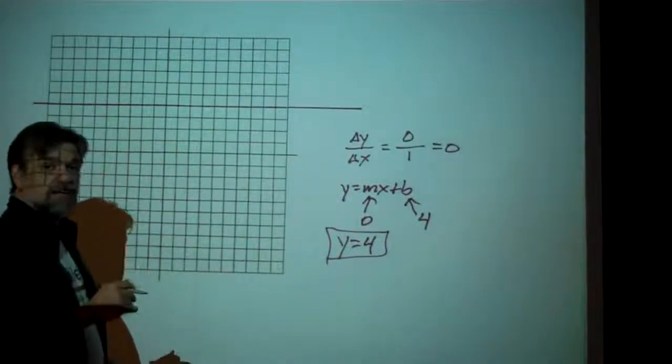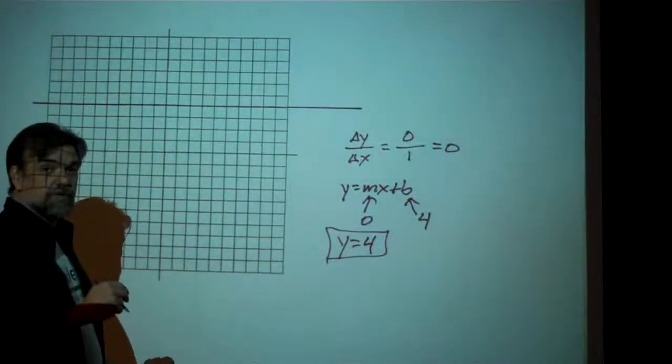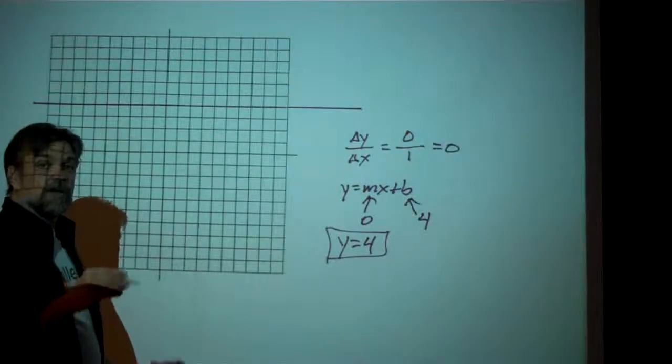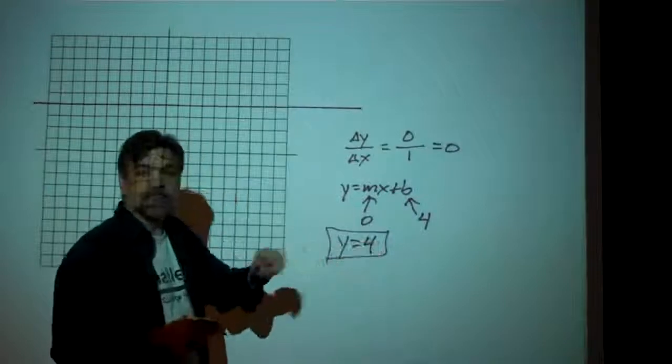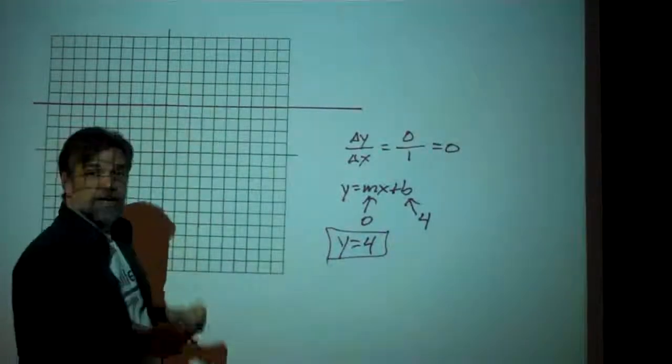So for horizontal lines, the two things I want you to come away with are: horizontal lines have a slope of 0, and the equation for the line is always y equals a constant, whatever the y-coordinate happens to be.